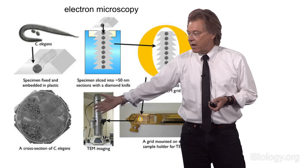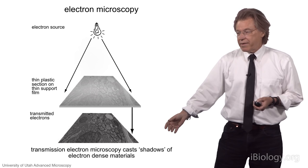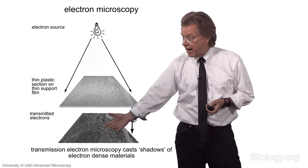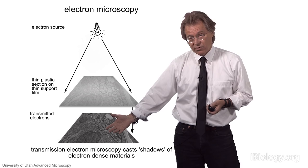The way the electron microscope works is that you have an electron source; the electrons pass through your sample on a thin film, then pass through onto photographic film, and that generates the image that you see.